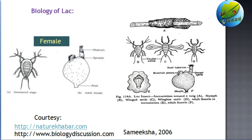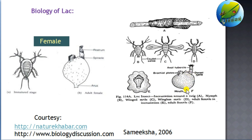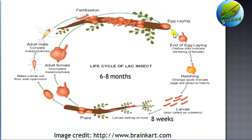Females, once fixed in the twigs and on the food resources, do not move anywhere. Their only job is to lay eggs and produce lac. Once fixed in the twigs, they are called cells. Based on their sizes, we can identify whether it is a male cell or a female cell. Female cells are mostly oval in shape; the only parts visible outside are the anal tubercle, dorsal spine, and a very rudimentary mouth part. Male cells are a little bit elongated compared to the females.